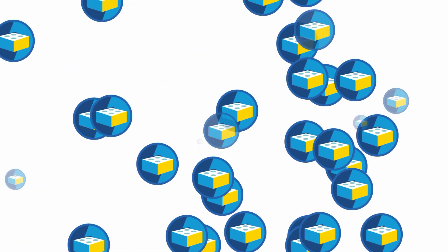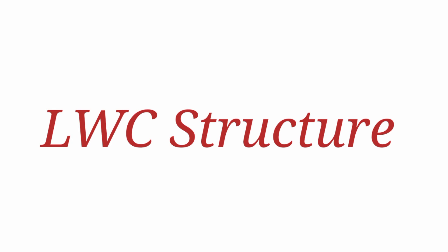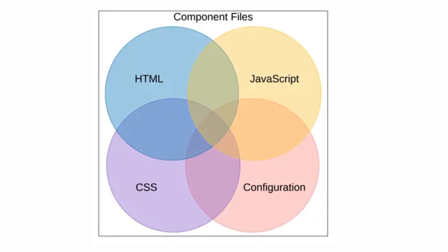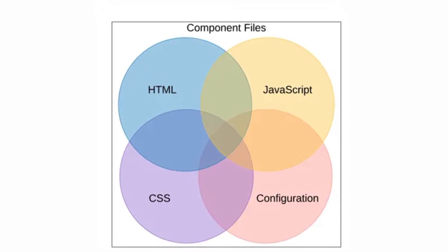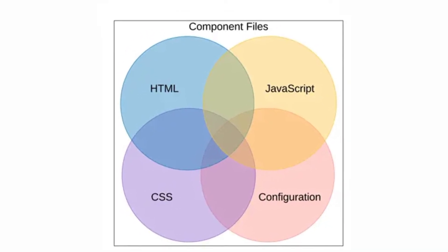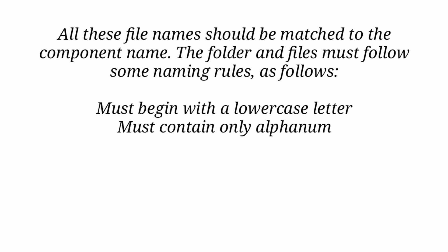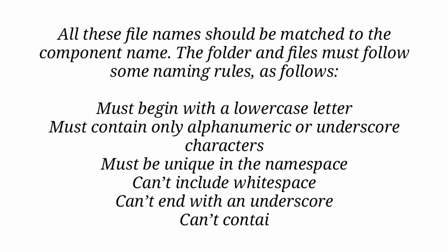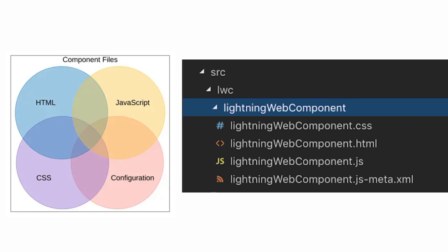Now I'll talk about LWC component structure. Similar to Aura components, the main contents of an LWC are HTML and JavaScript. There is optional CSS content, and in addition, an XML configuration file is included which defines the metadata values for the component. All file names should match the component name. The folder and files must follow the same naming rules: they must begin with a lowercase letter, contain only alphanumeric or underscore characters, be unique in the namespace, not include whitespace, not end with an underscore, and not contain any hyphens. I'll make another video on how to configure LWC on your laptop and what installations are needed.